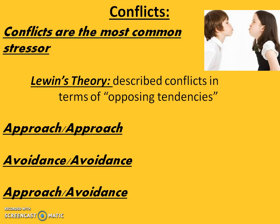In the 1930s, Kurt Lewin described conflict in terms of two opposing tendencies: approach and avoidance. When something attracts us, we want to approach it. When something frightens us, we try to avoid it. Lewin showed how different combinations of these tendencies create three basic types of conflict.